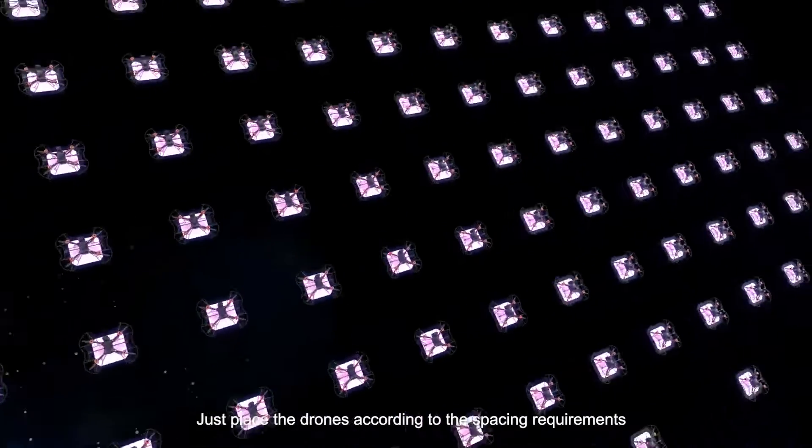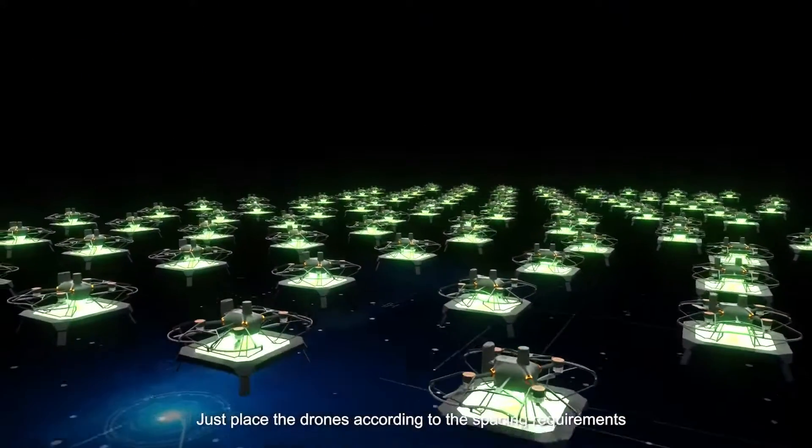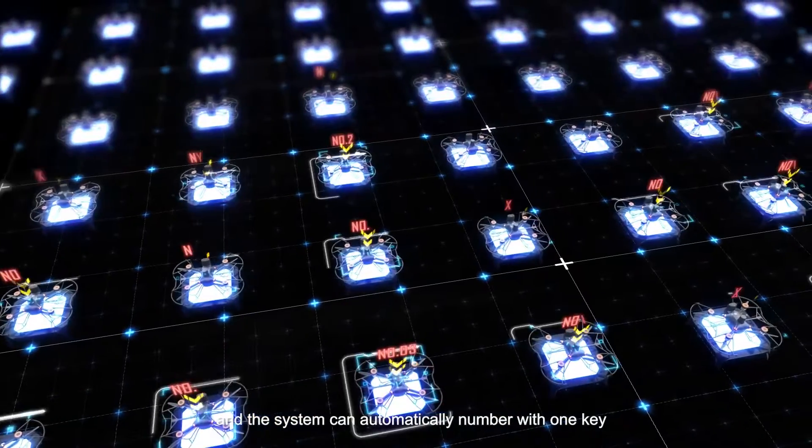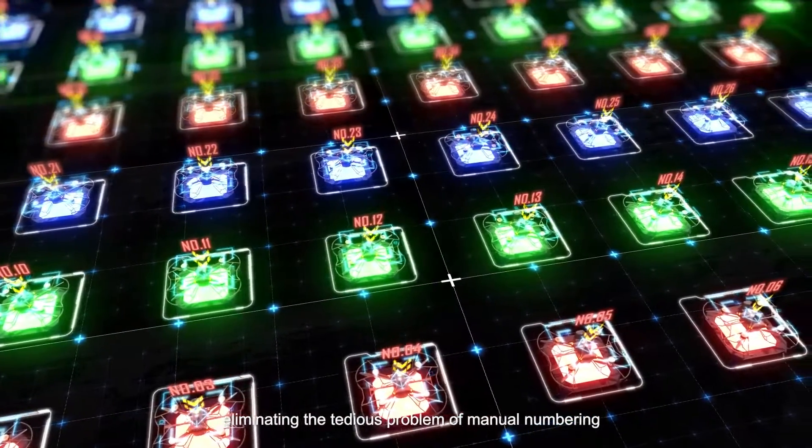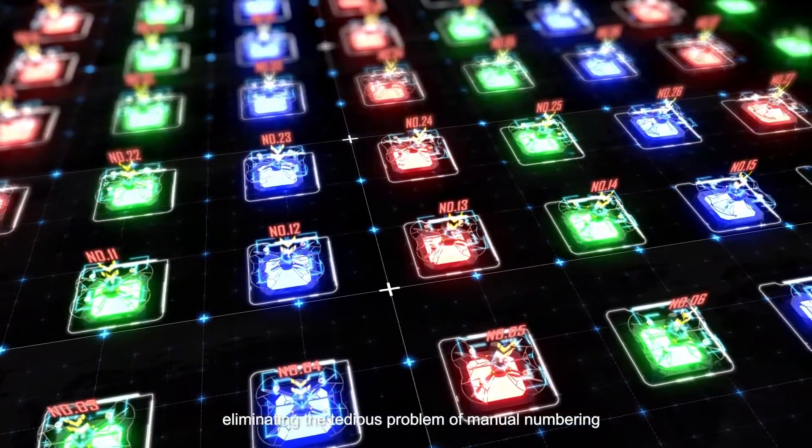Just place the drones according to the spacing requirements, and the system can automatically number with one key, eliminating the tedious problem of manual numbering.